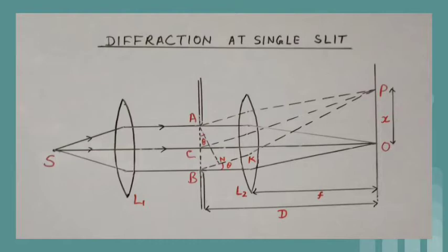Let us see the diffraction of light at a single slit in the given diagram. A source S of monochromatic light is placed at the focus of a collimating lens L1 to get a plane wave front, or parallel beam of light, which falls on the slit AB.